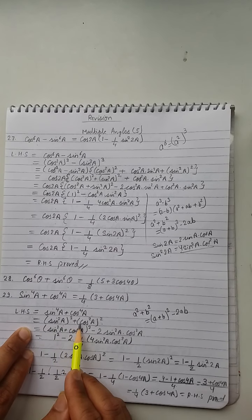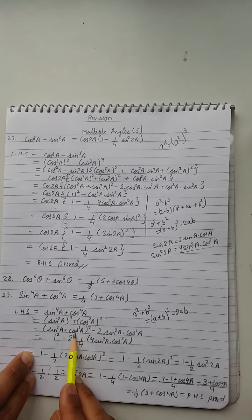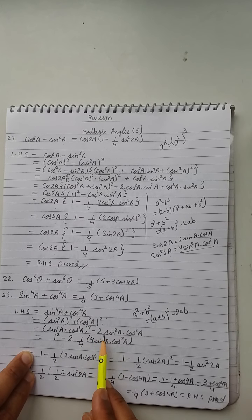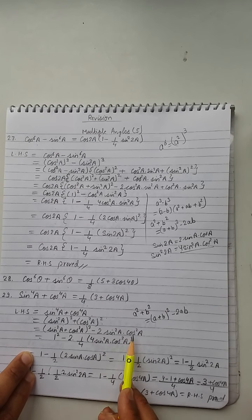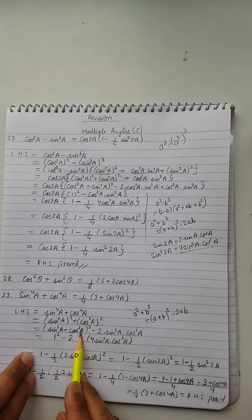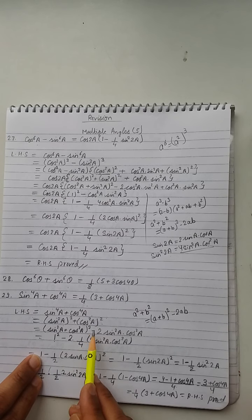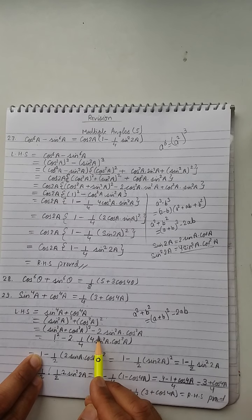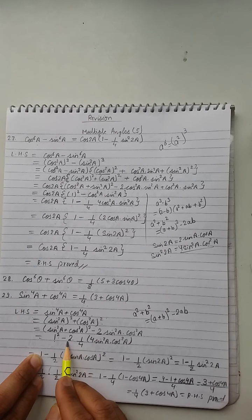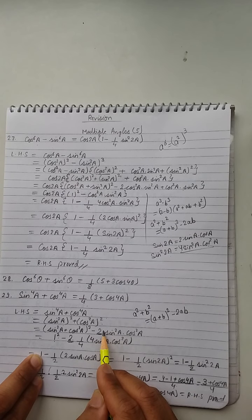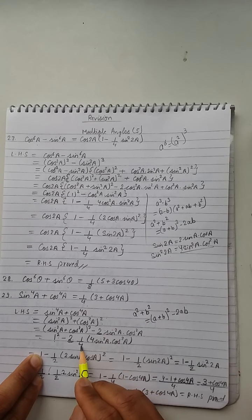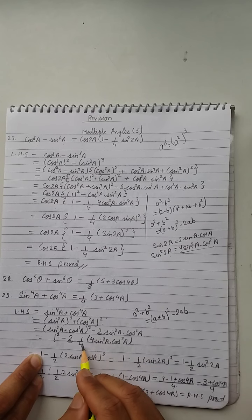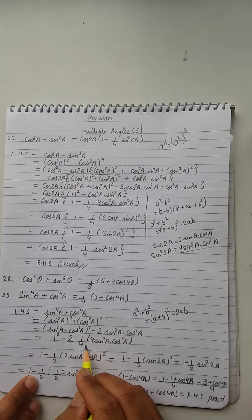Now inside the bracket we have 2sin²a·cos²a. I multiply by 4 and divide by 4 — 4 and 4 cancel. Square of 1 is 1. Minus 2 and 4 cancel, giving 1/2. Inside the bracket we have 4sin²a·cos²a, which we write as (2sina·cosa)².